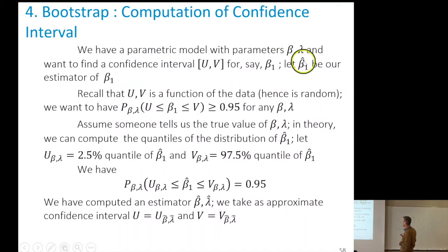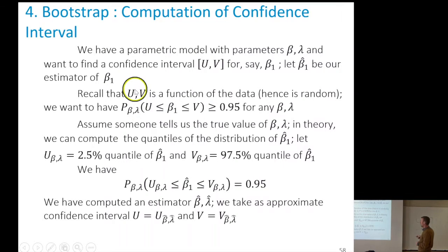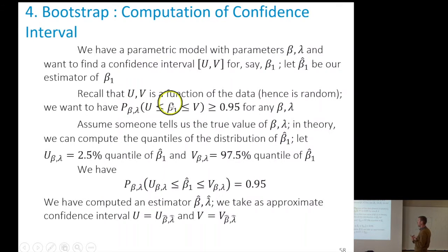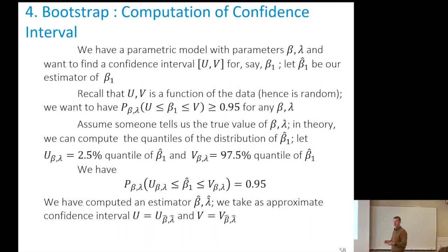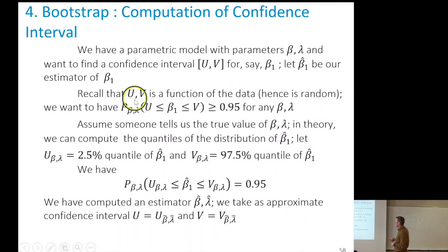The estimation depends on the data. When we want a confidence interval, we want to find two functions u and v of the data — therefore random — that satisfy the condition that the true beta 1 must be between our two bounds with probability at least 0.95. In order to formulate a probability, I need to know what beta and lambda are, because for every value of beta and lambda there's a different probability model.